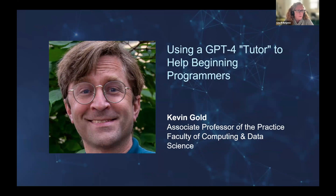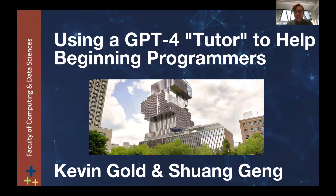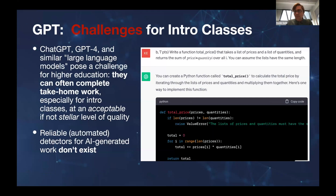I'm an instructor for DS110, Introduction to Data Science with Python. A big focus of the course is getting students to learn Python programming. There is a big challenge here with the introduction of generative AI, which is that for programming especially, generative AI can produce pretty reasonable output for students who just want to dump their problem descriptions into ChatGPT and get answers back. You can just dump in the whole problem and ChatGPT will say, here you go, you're done.